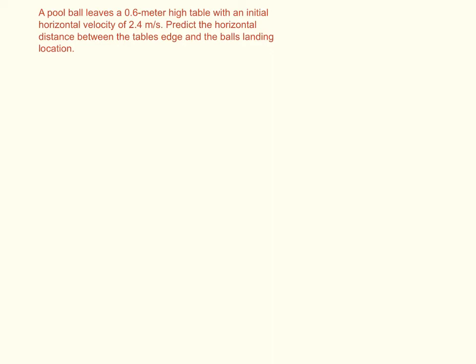We're going to use the four step process to solve this math problem and the problem reads: a pool ball leaves a 0.6 meter high table with an initial horizontal velocity of 2.4 meters per second. Predict the horizontal distance between the table's edge and the ball's landing location.